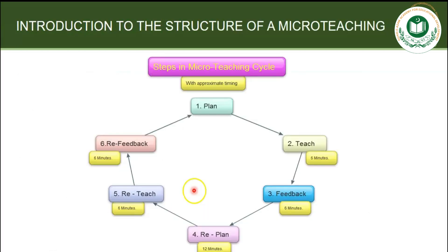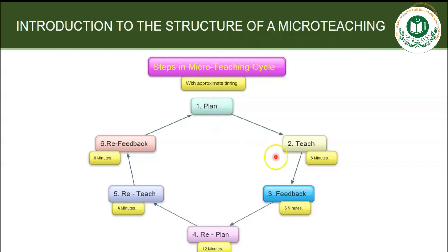Micro teaching is a cycle and there are six steps in the micro teaching cycle, as you can see on the screen. The first step is Plan — it means that the teacher plans the lesson. The second step is Teaching for six minutes. In the third step, the teacher takes feedback from peers or students within six minutes or less.